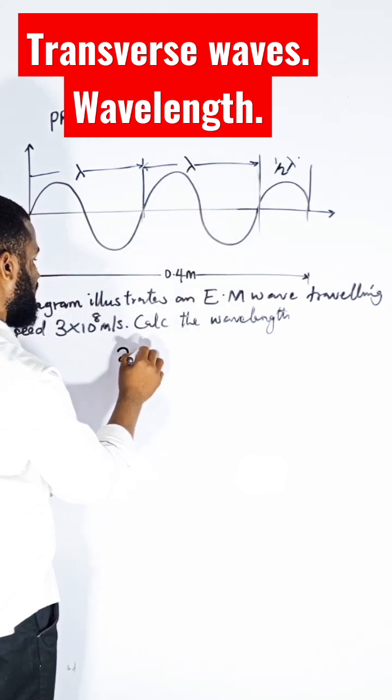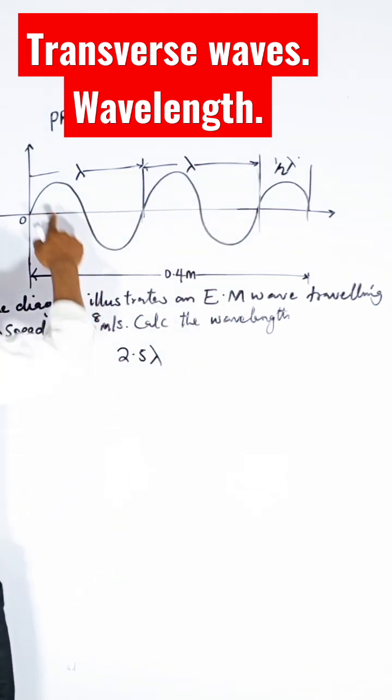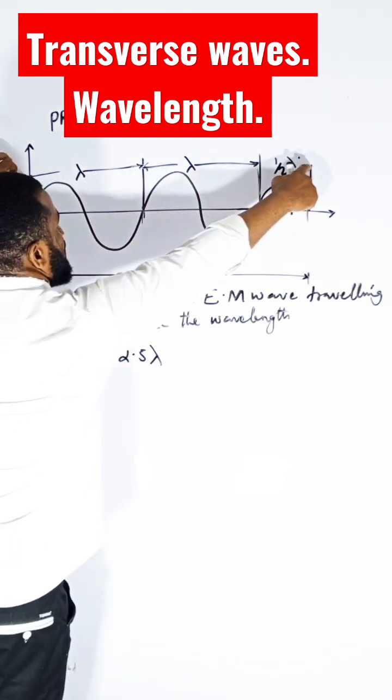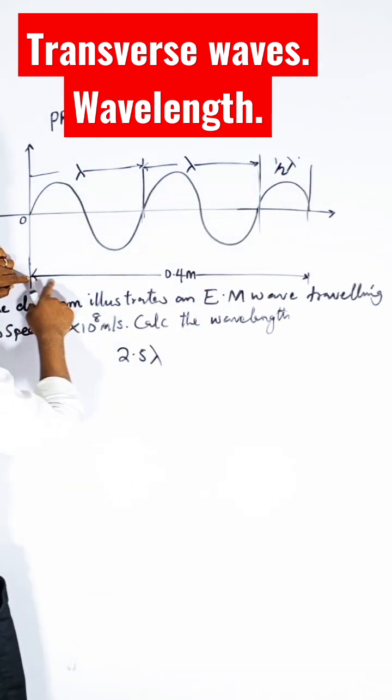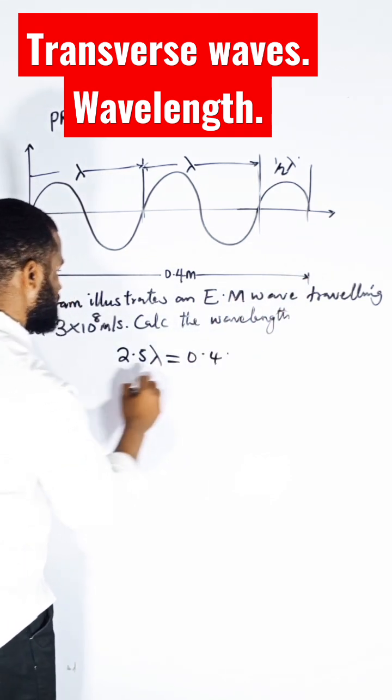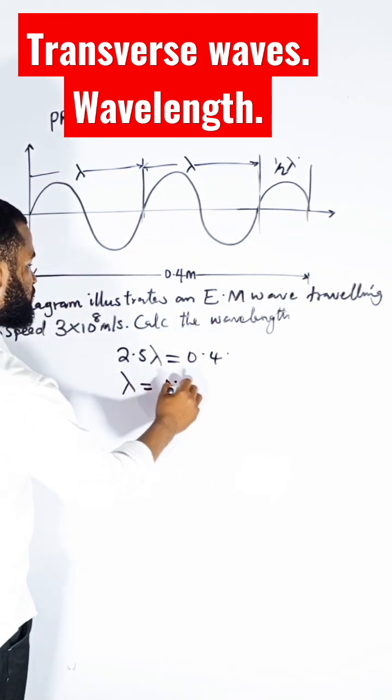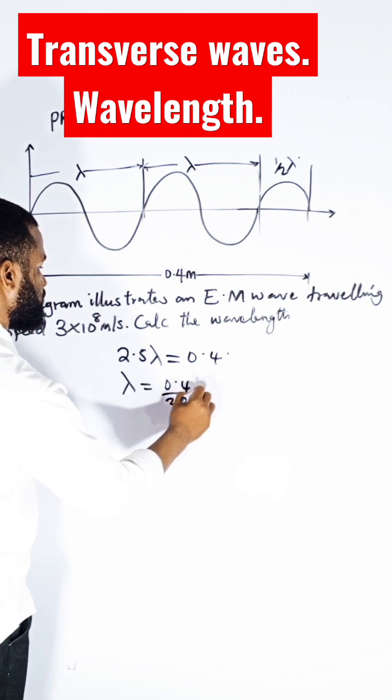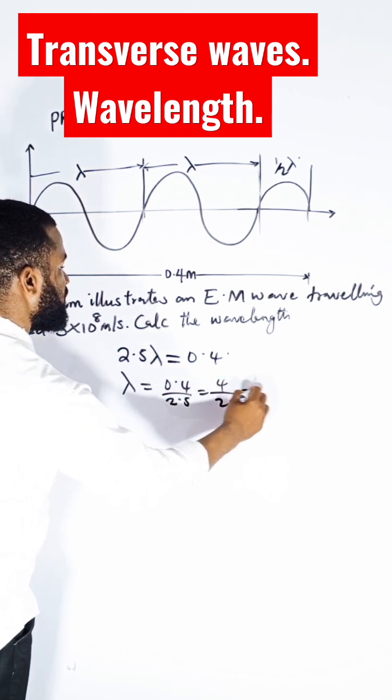From here to here is the total distance. The total distance is given as 0.4, so 2.5 wavelengths equals 0.4. Therefore, lambda equals 0.4 divided by 2.5, which is 4 over 25, which equals 0.16.